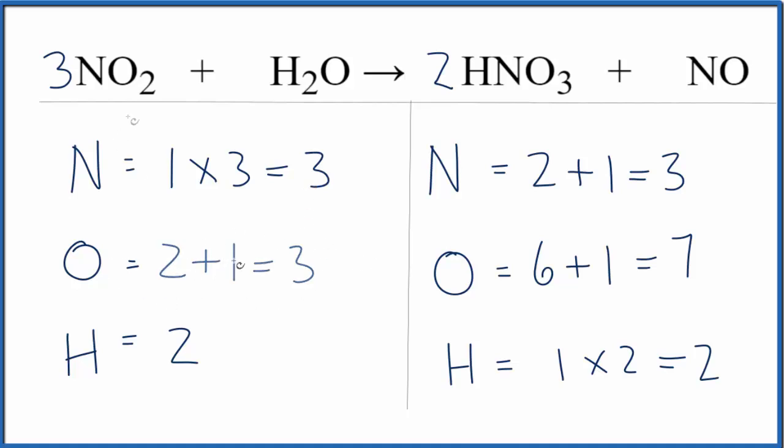And then let's update our oxygens. So I have two times three. That's six oxygens plus the one right here. And that gives me seven. And this equation is balanced.